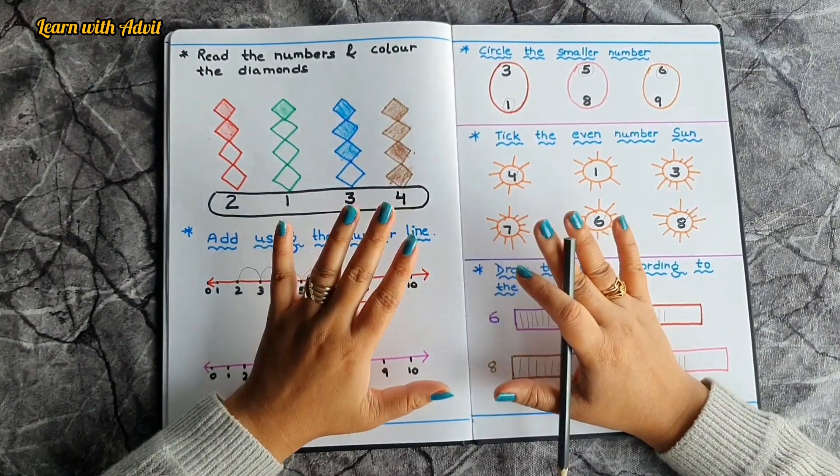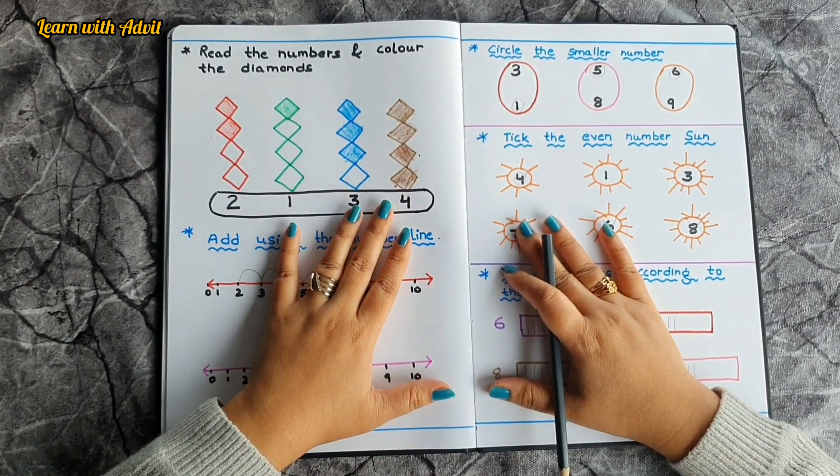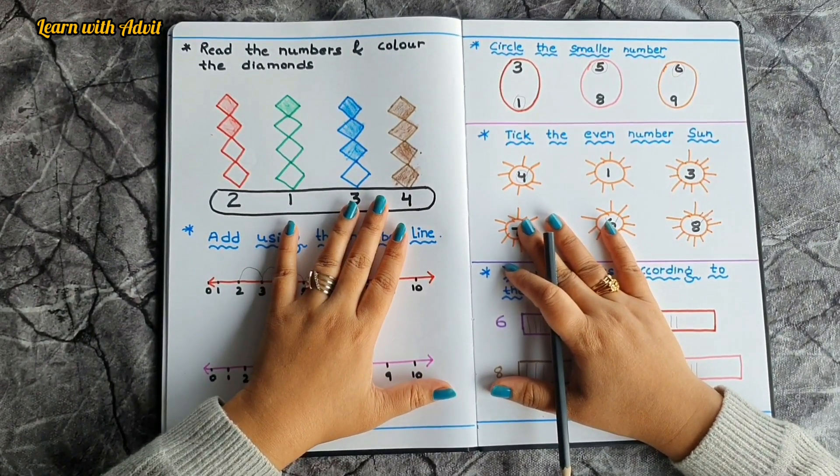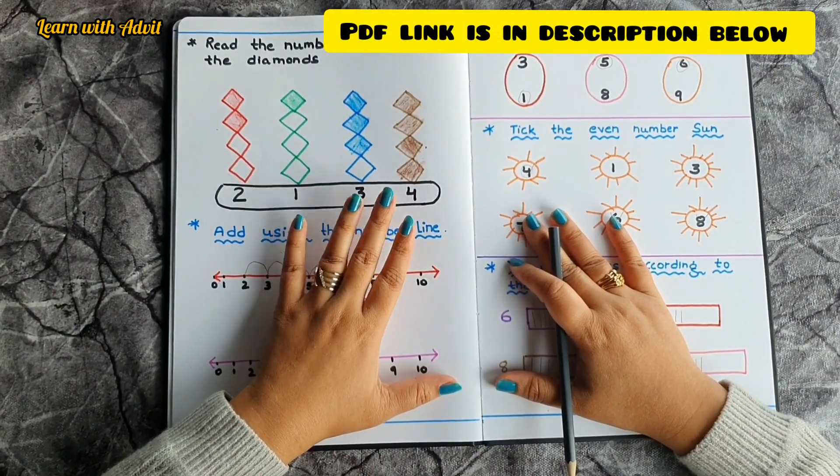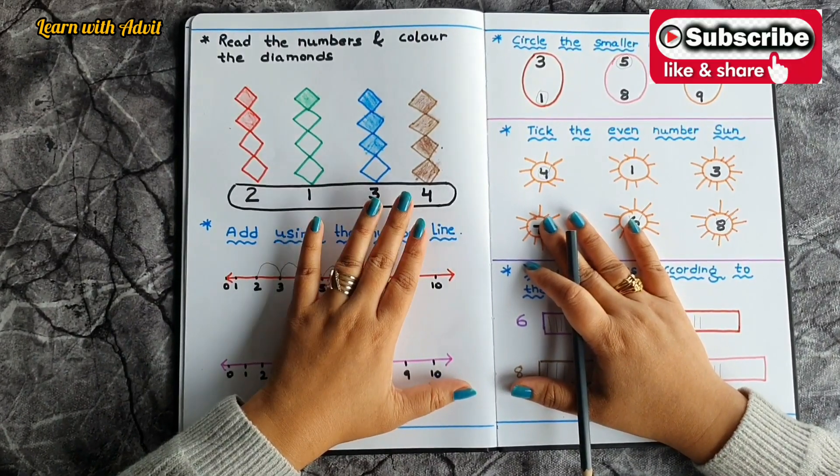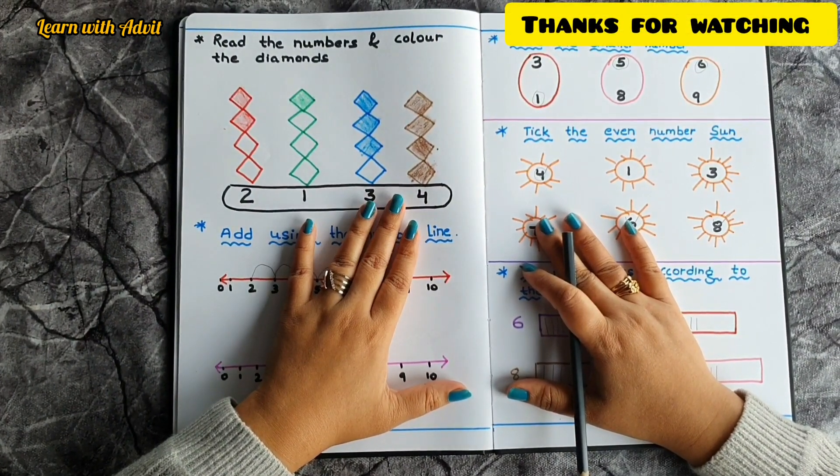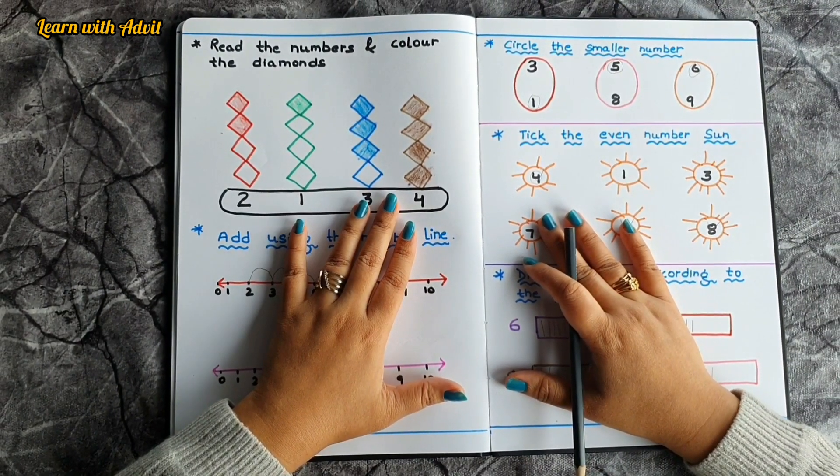Yes. I hope you like this worksheet. I will suggest please include this kind of worksheet because these are very basic math worksheets for the age group of 3 to 5. If you want to download this worksheet, I will provide PDF link in description below. For more such learning videos, please like, share, and subscribe to our channel Learn with Advit. Thanks for watching. See you next time with another video. Bye bye.